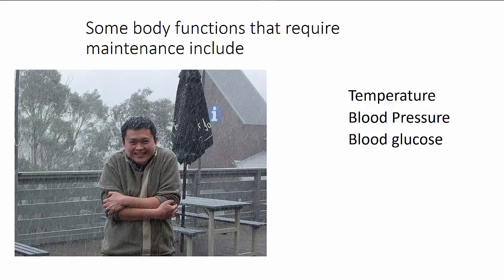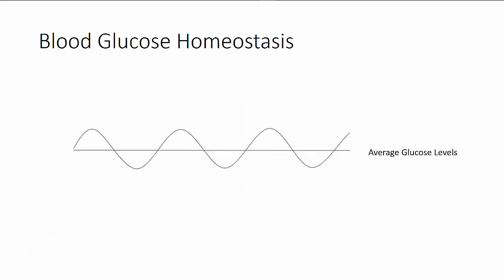Blood glucose also needs to be maintained within normal levels. This illustration shows how blood glucose changes over time. Notice that when blood glucose is too high the body sends a signal to lower it and when the blood glucose is too low a different signal is sent to raise it. So the glucose levels in the body are adjusted to maintain glucose homeostasis.